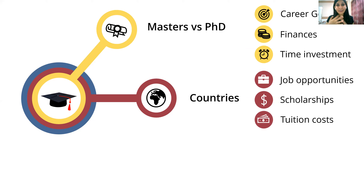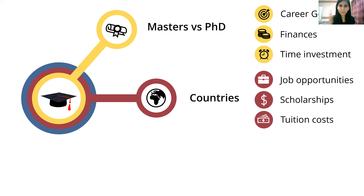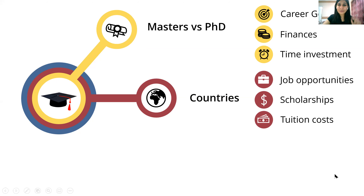Regarding tuition costs: Germany has almost zero tuition fees. The US is among the highest in the world — around 30 to 35 lakhs, and can be even more. Singapore is roughly 60 to 70% of US costs, so around 20 to 25 lakhs. Based on all these parameters — job opportunities, scholarships, and tuition costs — choose which countries you want to apply to.